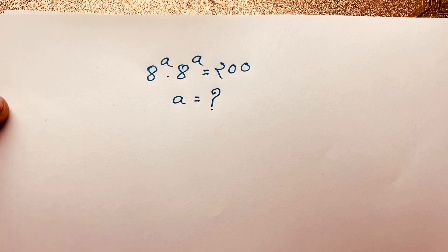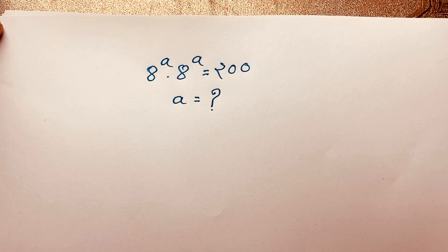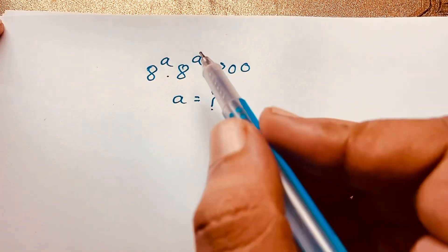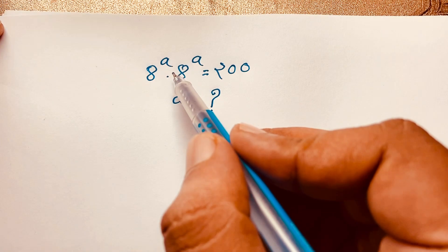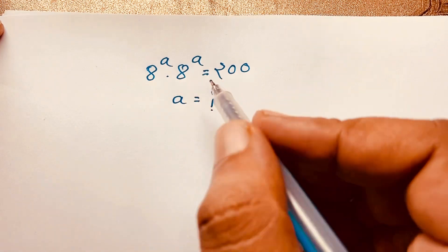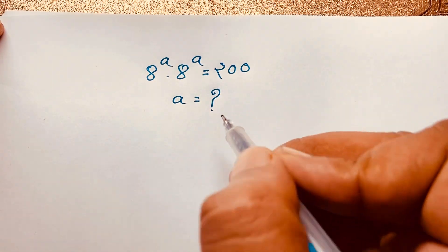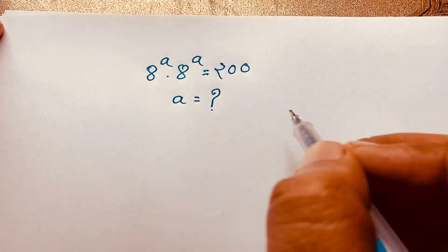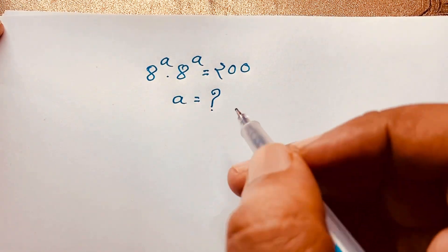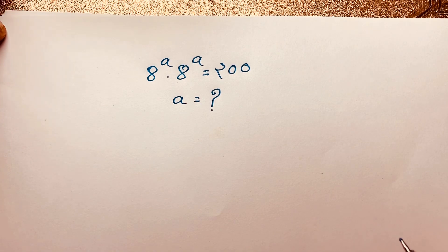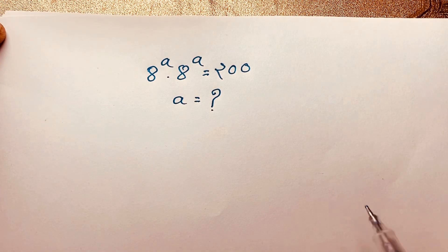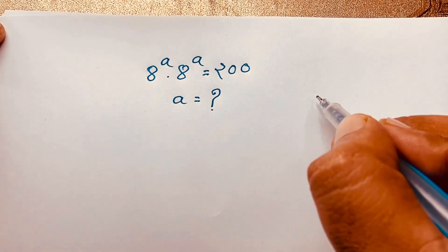Hello everyone. In this video we'll solve a nice exponential equation: 8^a times 8^a is equal to 200. We'll find out what is the value of a in this maths question.